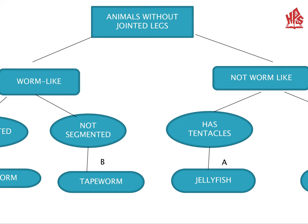In this slide we have four animals and we have to classify them using a dichotomous key. Animals can first be divided into two groups: worm-like and not worm-like. Not worm-like can be further divided into segmented and not segmented, while worm-like can be divided into has tentacles and has spiny skin. Finally, we can conclude which animals belong to which group.